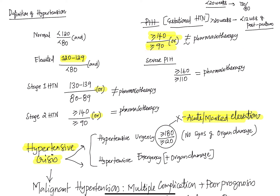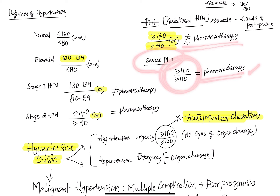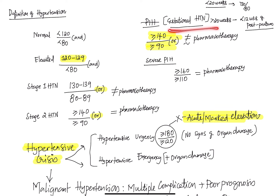Mild to moderate gestational hypertension cases do not require pharmacotherapy. We call it severe gestational hypertension if the value is more than 160/110, and that requires pharmacotherapy. So if a gestational hypertension case presents with 141/80, you do not give antihypertensives to that pregnant woman unless the BP is very severe with end-organ damage — you will not resort to pharmacotherapy in those cases.